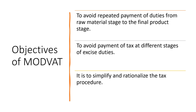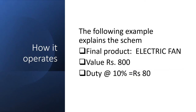Let's have a look at the objectives of ModVAT. First, to avoid repeated payment of duties from the raw material stage to the final product stage — instead of making payment at all stages, it waits for the final stage and then concessions are applied. Second, to avoid payment of tax at different stages of excise duties, saving manufacturers from paying at all stages, and to simplify and rationalize the tax procedure.